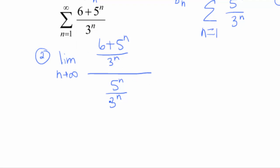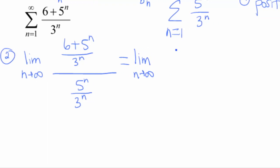But you notice we have a fraction over a fraction, so what I'm gonna do first then is I'm gonna go ahead and multiply by that reciprocal of my denominator. So I've got 6 plus 5 to the n over 3 to the n. I'm gonna flip this denominator then, so I'm gonna end up with 3 to the n over 5 to the n.